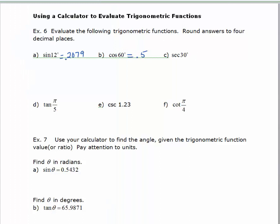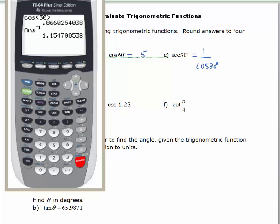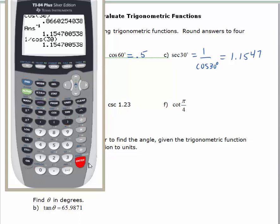The secant of 30 degrees is 1 over the cosine of 30 degrees. To do this on your calculator, evaluate the cosine of 30 degrees and then take the reciprocal. Hit cosine, 30, close parentheses, enter, then use the x⁻¹ button to take the reciprocal. Rounded to 4 decimal places, that's 1.1547. You can also type it as 1 divided by cosine(30) and get the same answer.